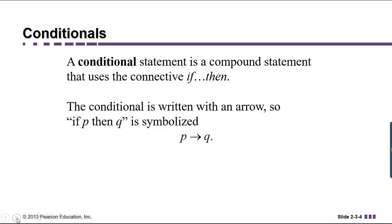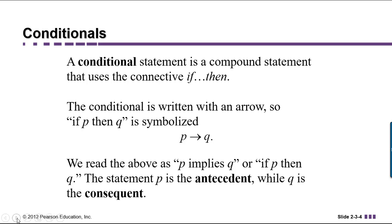A conditional statement is a compound statement that uses the connective if-then. The conditional is written with an arrow. So if you want to write if-P-then-Q in symbols, you write P→Q with the arrow pointing toward the Q. The two most common ways to read this are 'P implies Q' or 'if P then Q.' The P, the part that comes before the arrow, is called the antecedent — with ante meaning before — while Q, the part that follows the arrow, is called the consequent.